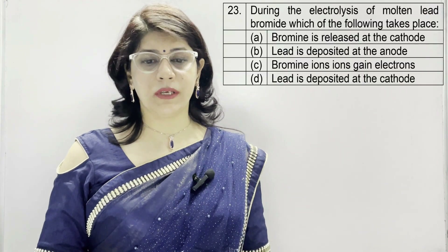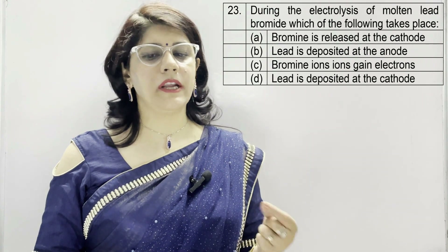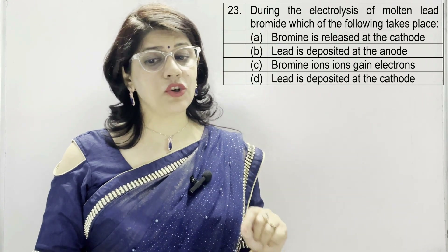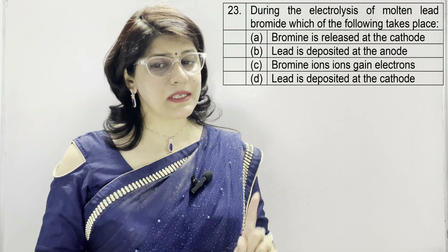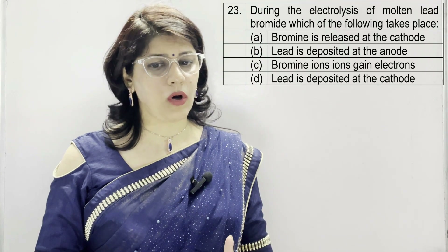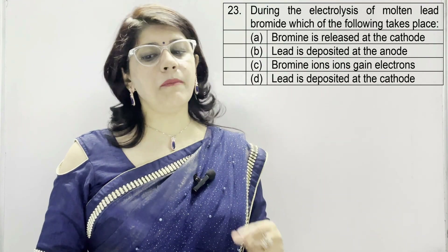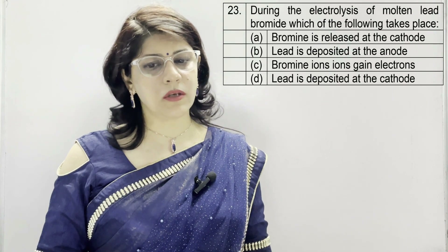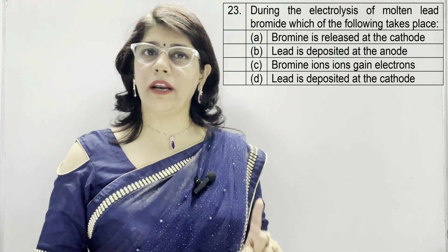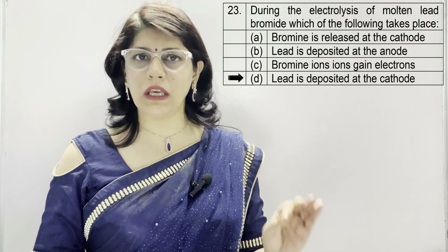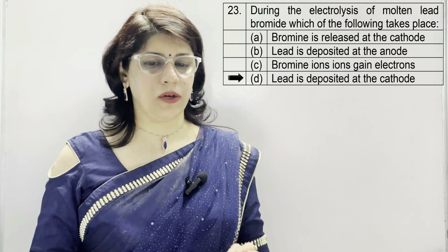Question number 23: during the electrolysis of molten lead bromide, which of the following takes place? A: bromine is released at the cathode, B: lead is deposited at the anode, C: bromine ions gain electrons, D: lead is deposited at the cathode. The correct option is D — lead is deposited at the cathode.